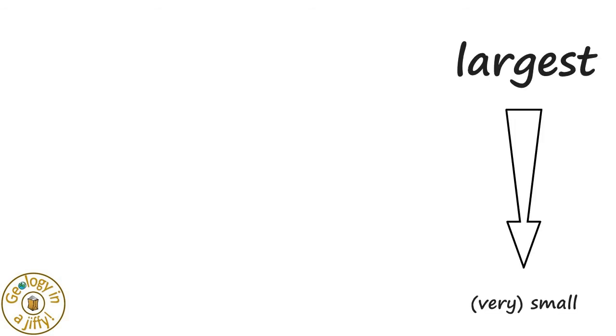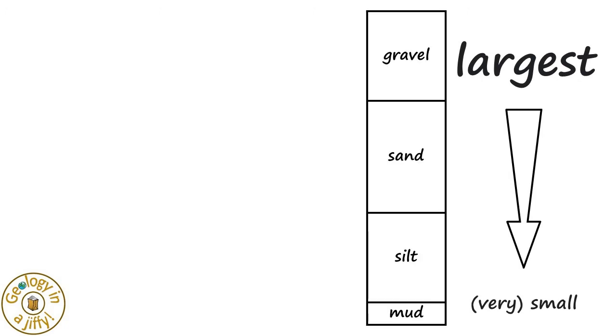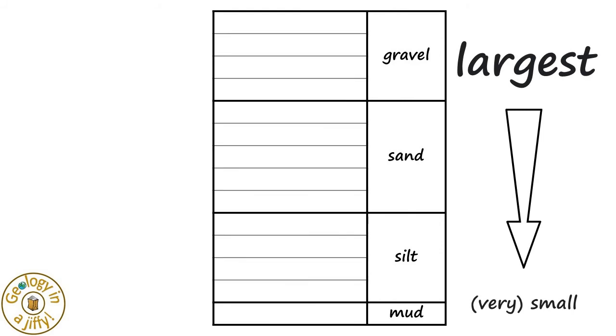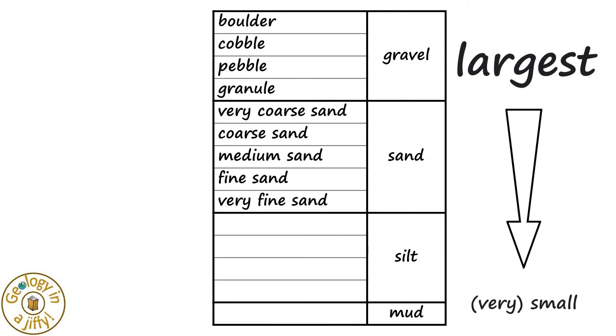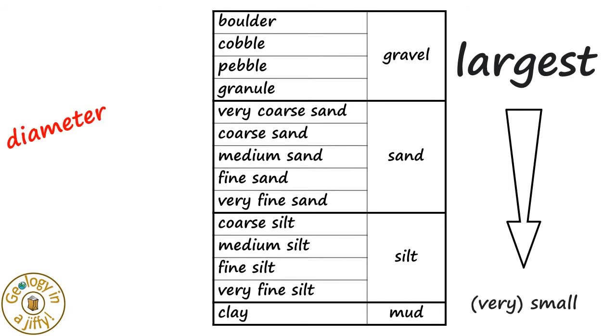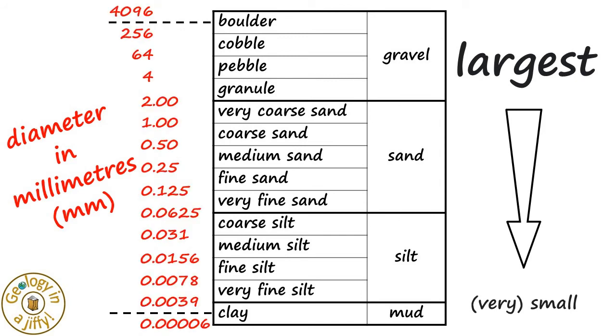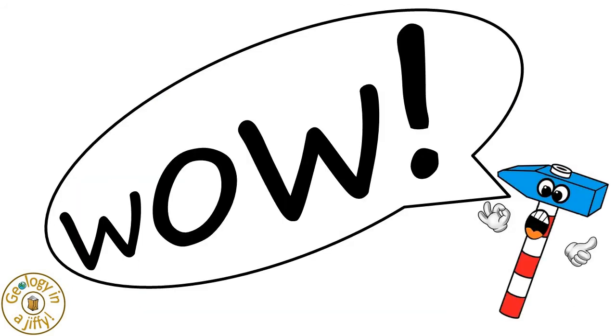So decreasing in size, this then makes our scale go from gravel, to sand, to silt, to mud, which we can then further break down by decreasing grain size within each grade, ending with clay having the tiniest diameter grains, all of which we can measure in millimeters using these measurements. Wow!